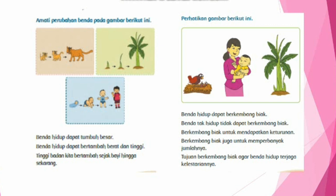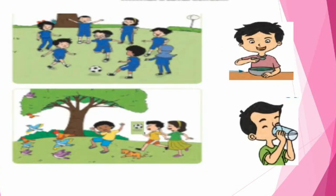Ciri lain benda hidup adalah dapat bergerak. Manusia bergerak dengan cara berlari, berjalan, melompat, menggunakan kakinya. Hewan juga demikian, ada yang dapat berjalan, berlari, melompat, seperti hewan kucing. Burung bergeraknya dengan cara terbang karena mempunyai sayap, namun burung juga dapat berjalan karena mempunyai kaki. Tumbuh-tumbuhan bergerak karena ada sinar matahari.